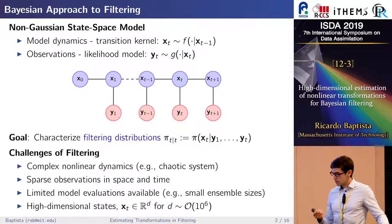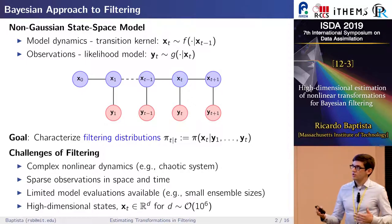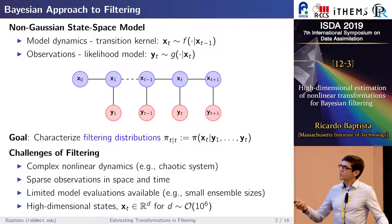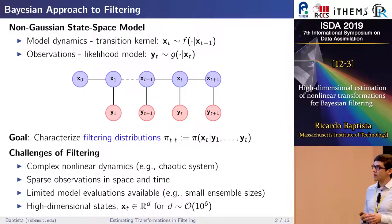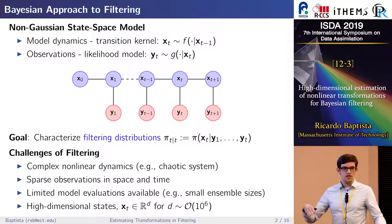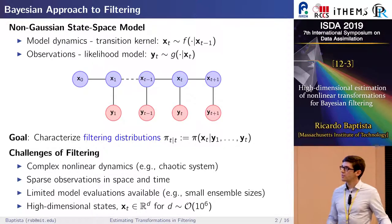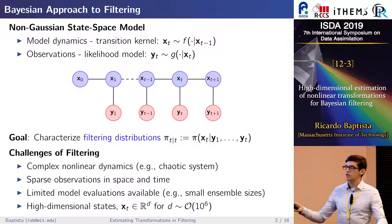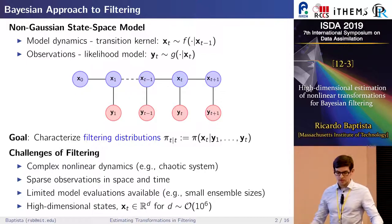For motivation and to set up notation: we're interested in sequential Bayesian inference with nonlinear dynamical models, where we have the state of a system denoted by X following some Markov process. We collect observations from some likelihood model, and our goal is to characterize the filtering distribution — the distribution of the state at time t given all data seen up until that point.